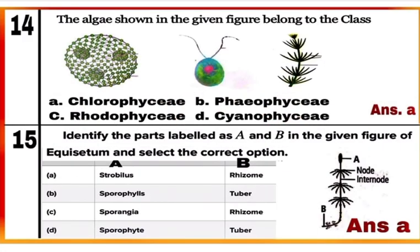Question 14: The algae shown in the given figure belong to which class? These algae are Volvox, Chlamydomonas, and Chara — all are green algae belonging to class Chlorophyceae. Mark A as the correct answer.